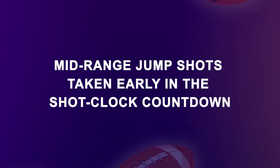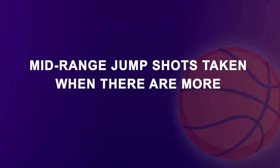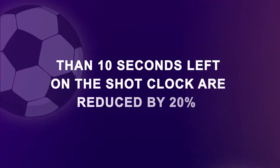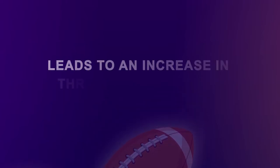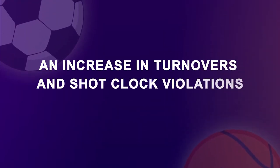This Markov chain study focuses on mid-range jump shots taken early in the shot clock countdown. These shots are typically considered to be less efficient than shots taken from other regions on the court. A simulation is run in which the number of mid-range jump shots taken where there are more than 10 seconds left on the shot clock are reduced by 20%. The simulation tells us that this reduction leads to an increase in three-point attempts, as well as an increase in turnovers and shot clock violations.